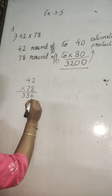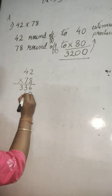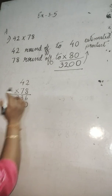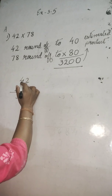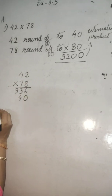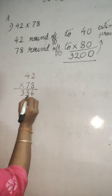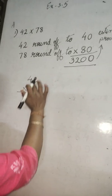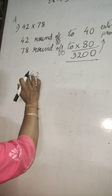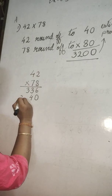Leave the first place, put 0. 7 times 2 is 14 — write 4, carry 1. 7 times 4 is 28 plus 1 is 29.